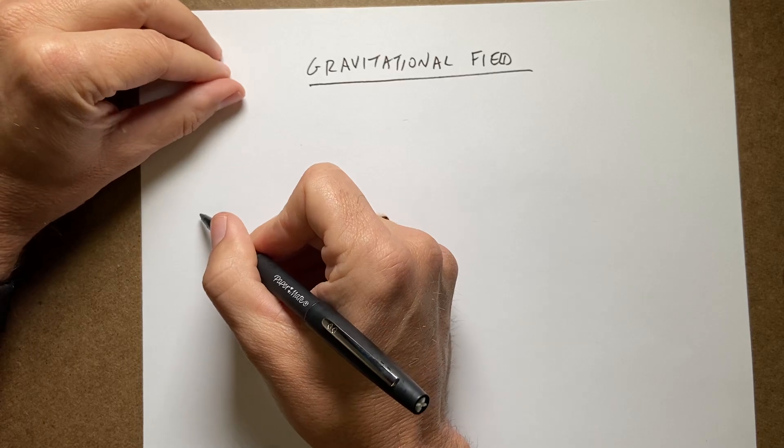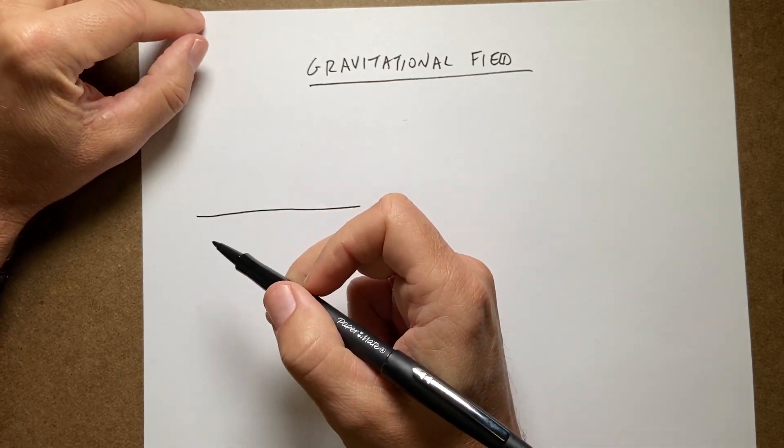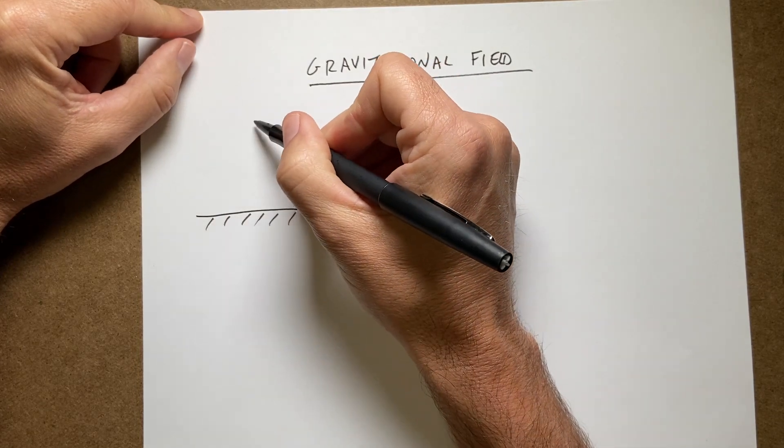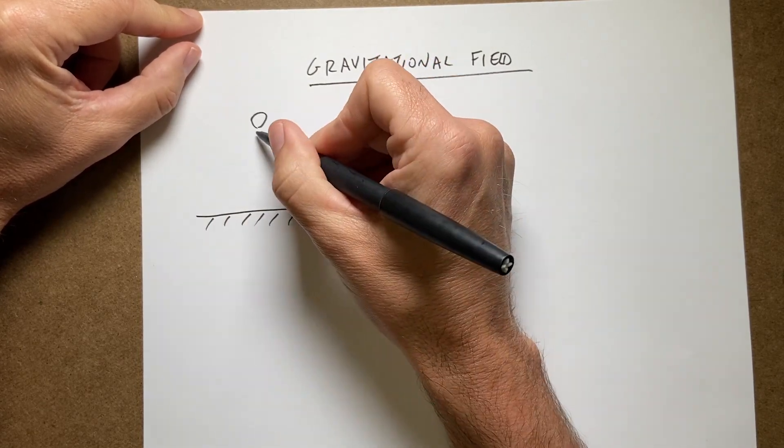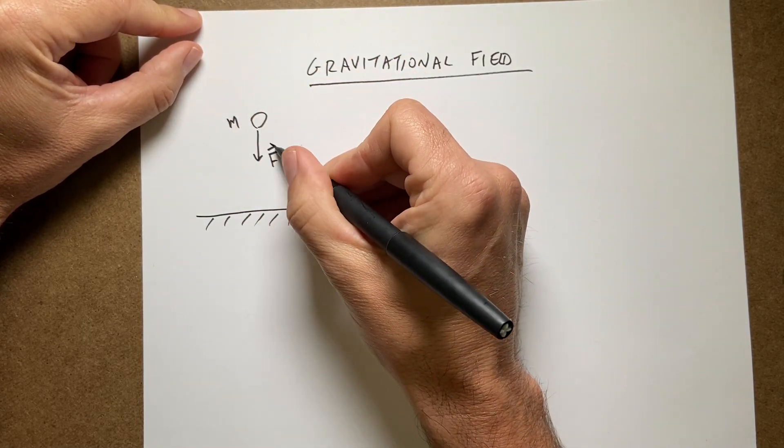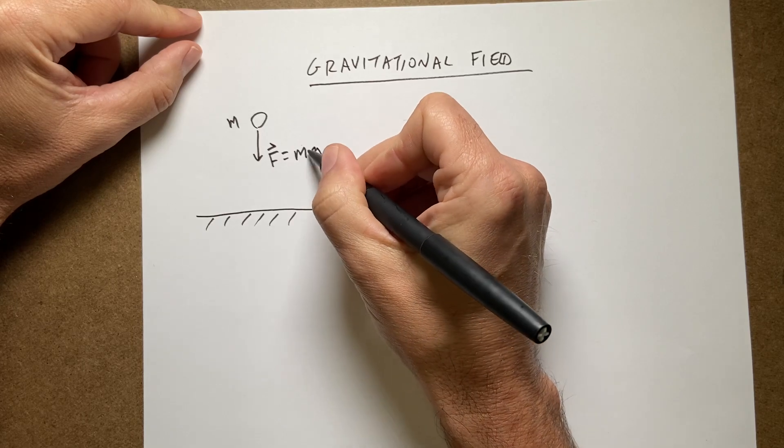So if you're on the surface of the earth, which you most likely are, but not for sure, and I have some object, there is a downward gravitational force. This is some mass m, then the downward gravitational force would be mg.